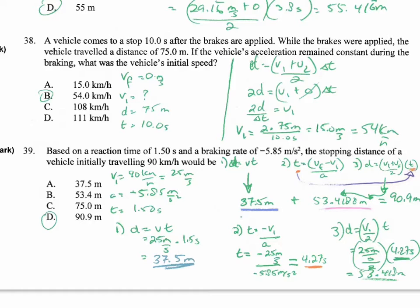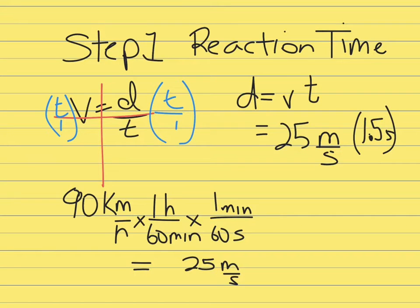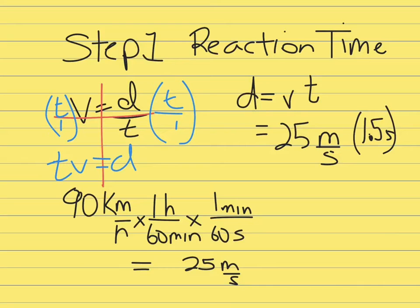Now let's take a look at question 39 and break it down into step 1, step 2, step 3. The first thing you have to realize is that velocity equals distance divided by time. To isolate distance, you multiply both sides by time, so you end up getting distance equals speed times time.